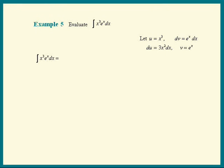Now the given integral is equal to uv minus the integral of v du. We get u times v is x cubed e to the x minus the integral of v du.